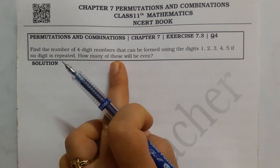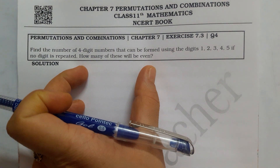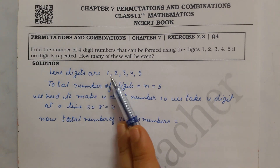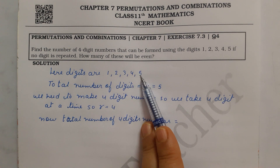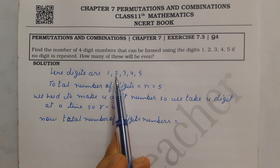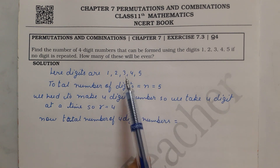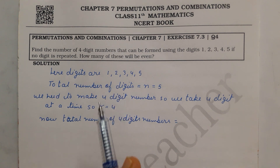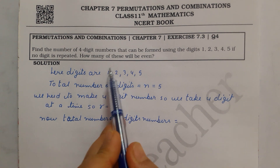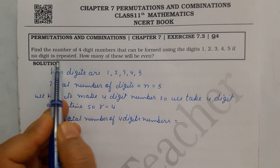The second part asks how many of these numbers will be even. We will solve the simple part first, as we have done in the 7.1 exercise. We have a formula and a counting method, and we need to solve by both methods. First we identify which digits we are working with: 1, 2, 3, 4, 5.